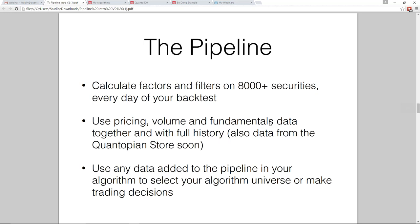The Pipeline API allows you to calculate factors and filters on 8,000-plus securities every day of your backtest, enabling mass calculation across the entire universe. You can do this with pricing, volume, and fundamentals data, and you have a full history of any data element you choose. In the near future, you'll also be able to use any data available in the Quantopian store, and you can use any data added to your pipeline to select your universe or make trading decisions.